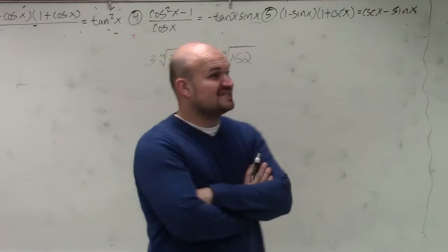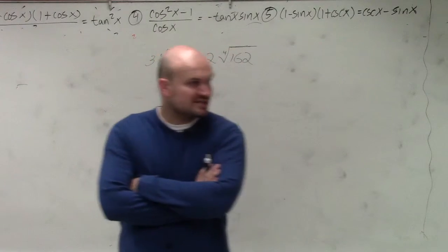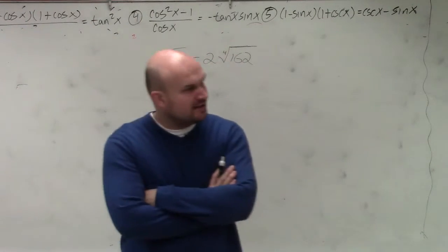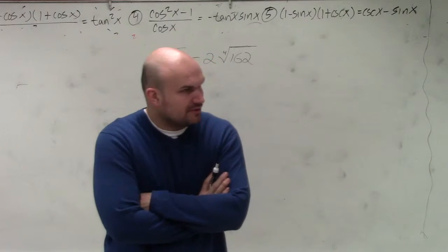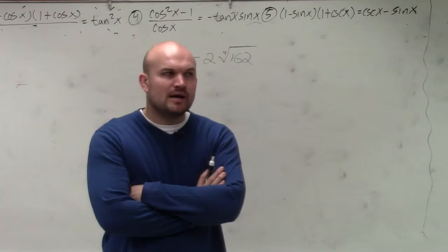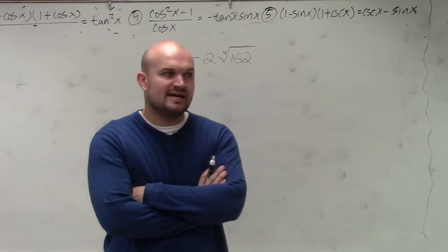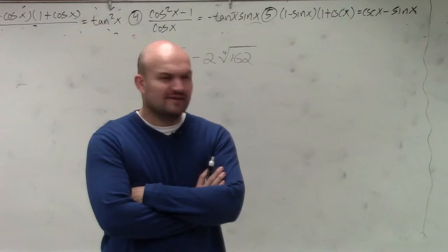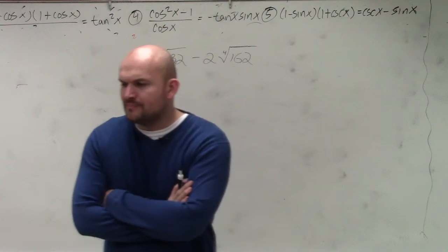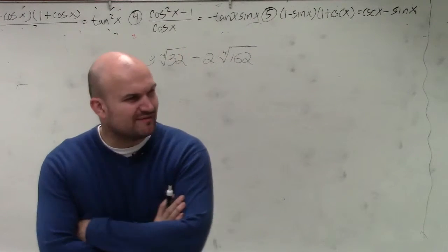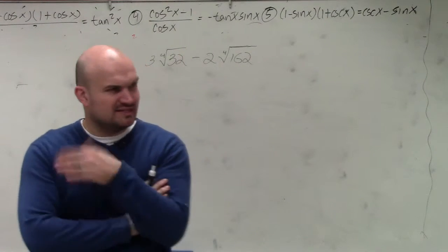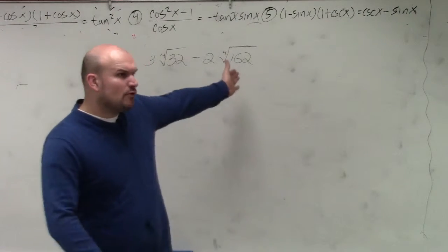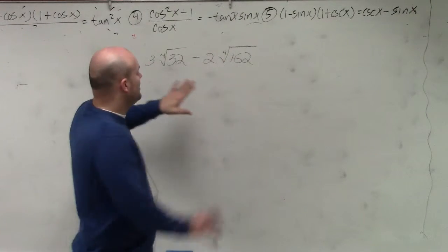Square numbers — 4, 9, 16, 25, 36, 49, 64, 81 — you guys remember those. But cube numbers, which we just did — 8, 27, 64, 125 — they're not as familiar. And numbers to the 4th power are even less familiar.